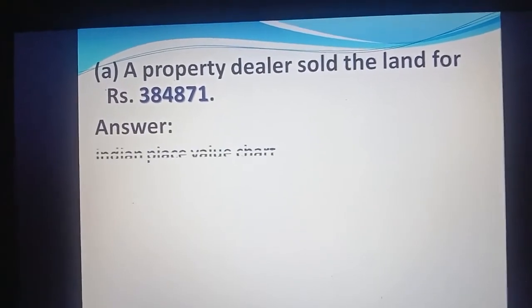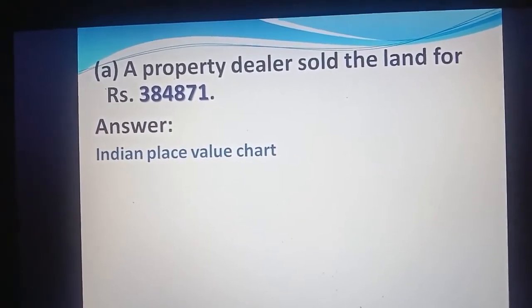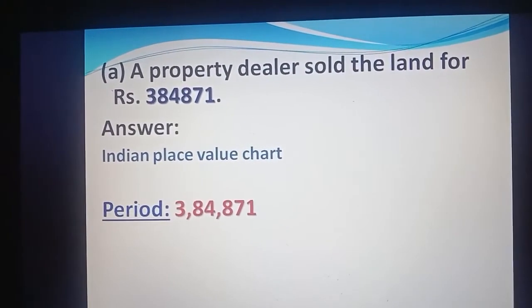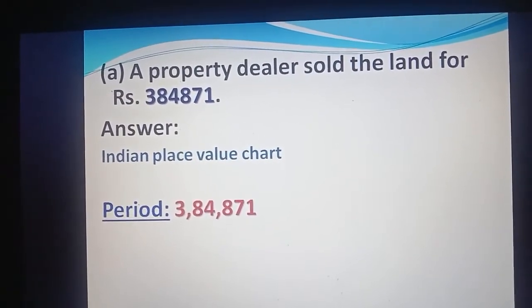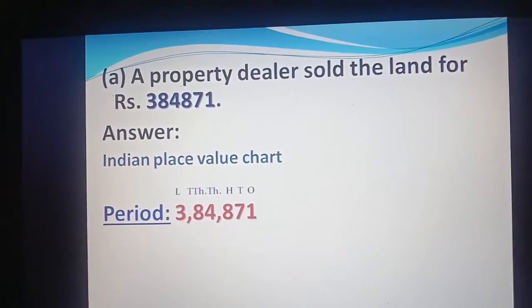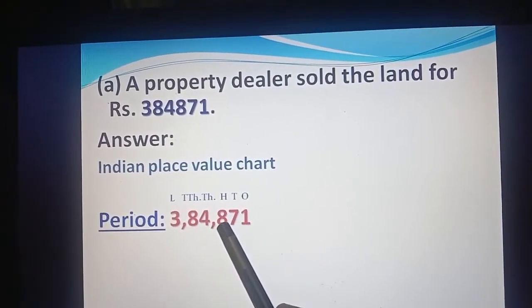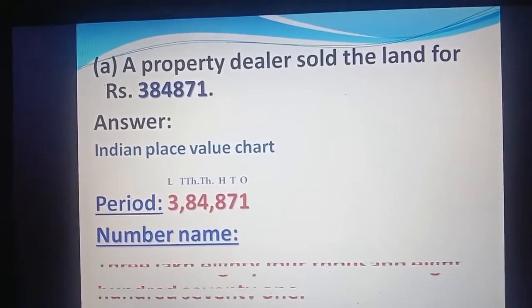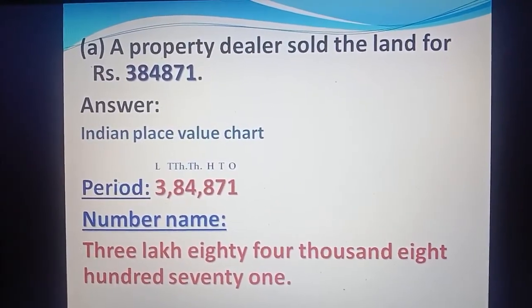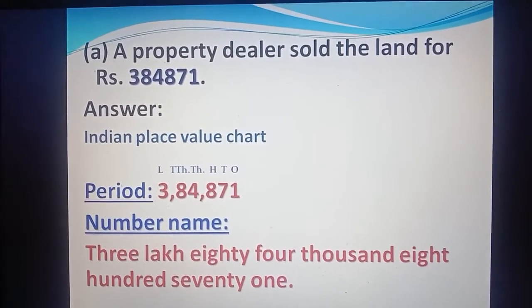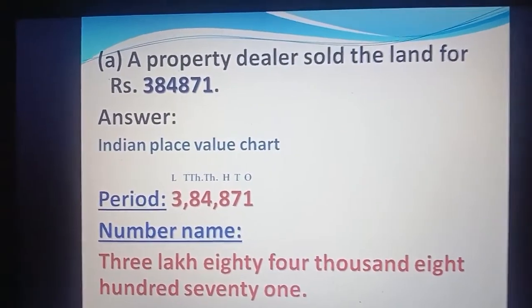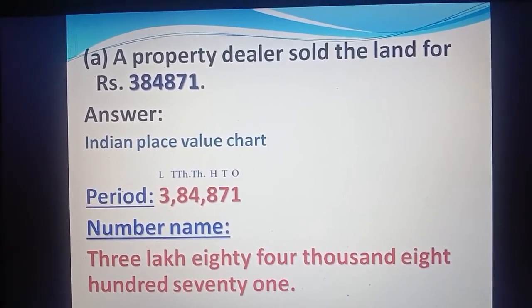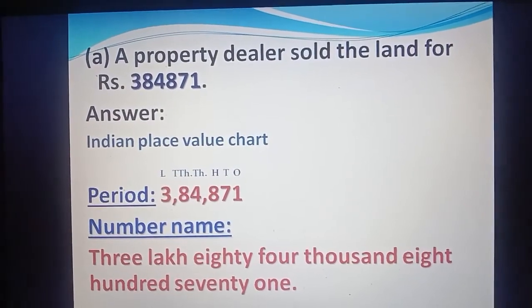Answer. First, we write the number name according to the Indian place value chart and divide according to its period: 3,84,871, and assign places — ones, tens, hundred, thousand, ten thousand, and lakh. So its number name is three lakh eighty-four thousand eight hundred seventy-one. The answer is: a property dealer sold the land for rupees three lakh eighty-four thousand eight hundred seventy-one.